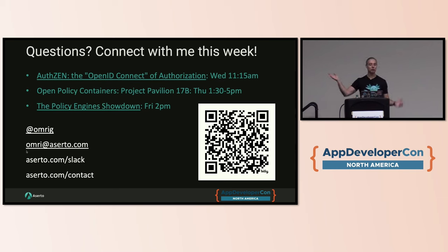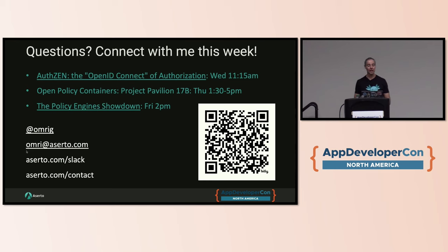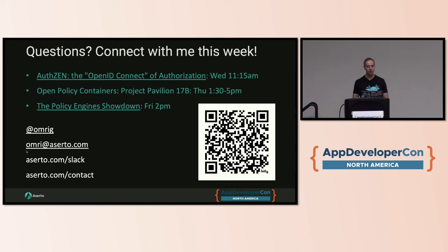Here's a QR code with my schedule — just schedule some time. I'm giving two other talks: one about AuthZen, which I forward-referenced a few minutes ago, and one about the policy engines showdown, Friday at 2 PM. You can find me at the CNCF project kiosk area, 17B, on Thursday between 1:30 and 5 PM. And if you want to connect on Slack or schedule some time outside of KubeCon, those are my socials. Thank you so much and have a great rest of your AppDevCon.